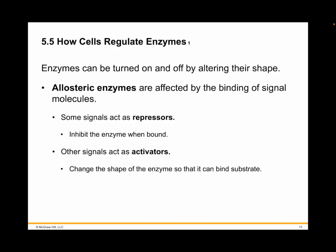Now let's get to how cells regulate enzymes. You'll describe how repressors interact with allosteric sites of enzymes and the results of this interaction. Enzymes can be turned on and off by altering their shape. Because an enzyme must have a precise shape to work correctly, the cell can control when an enzyme is active by altering its shape. Many enzymes have shapes that can be altered by the binding of a signal molecule to their surface, making them work better or worse — by way of activation or inhibition. These are called allosteric enzymes, and the binding site is called the allosteric site.